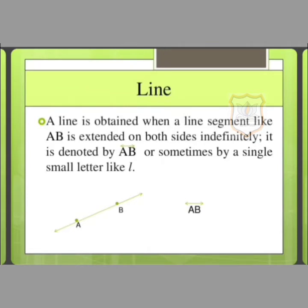It is denoted by line AB or sometimes by a single small letter like L. A line has no endpoints and it cannot be measured as it extends on both sides indefinitely.